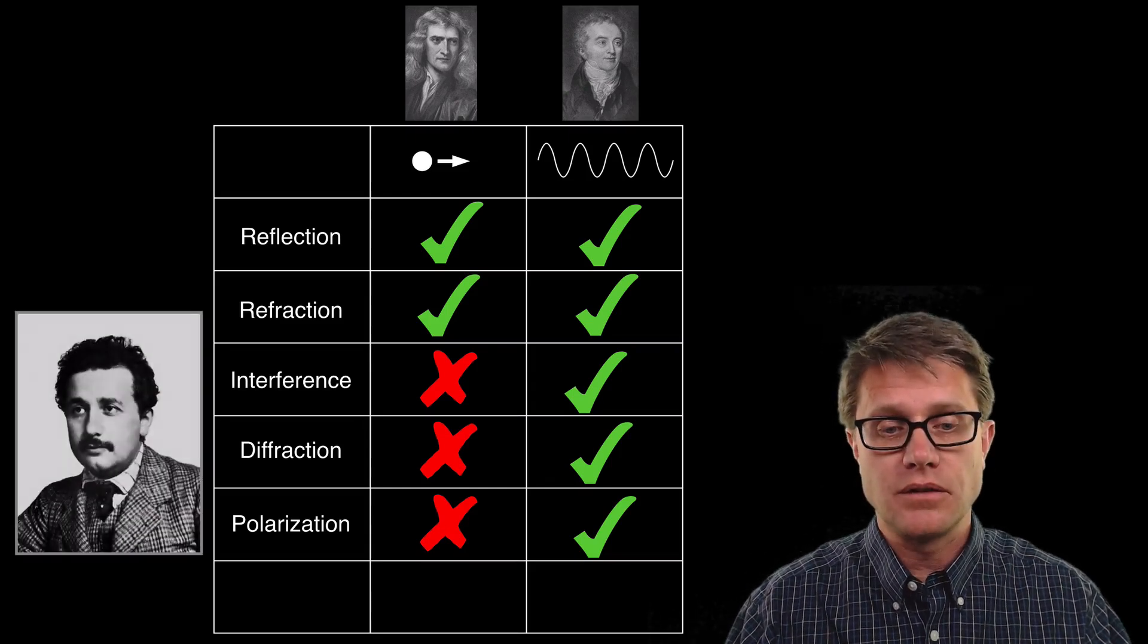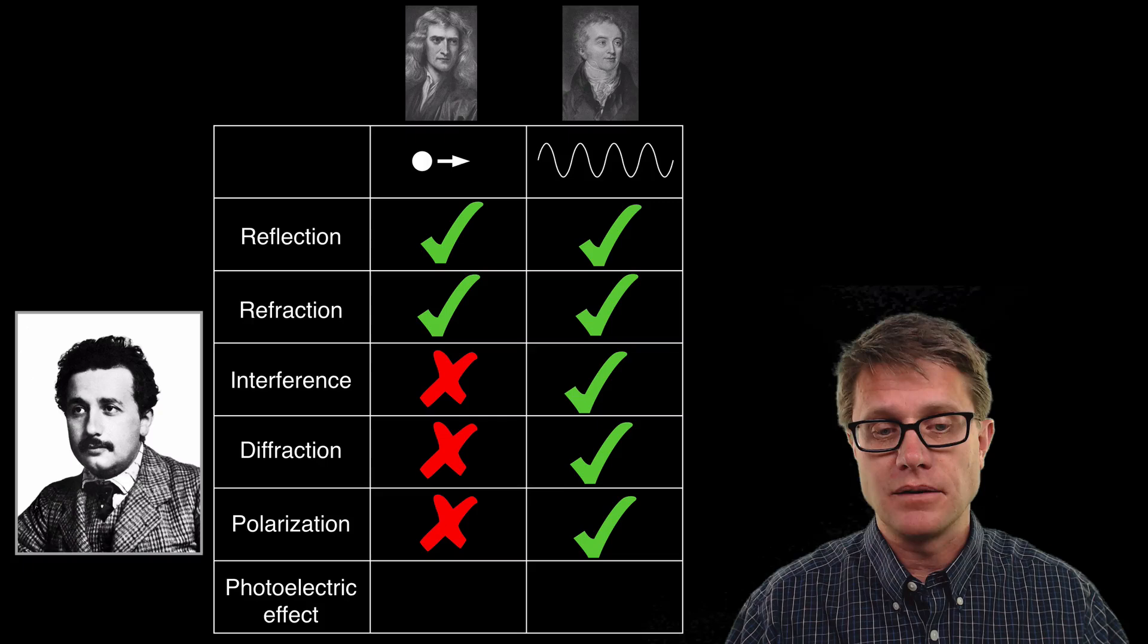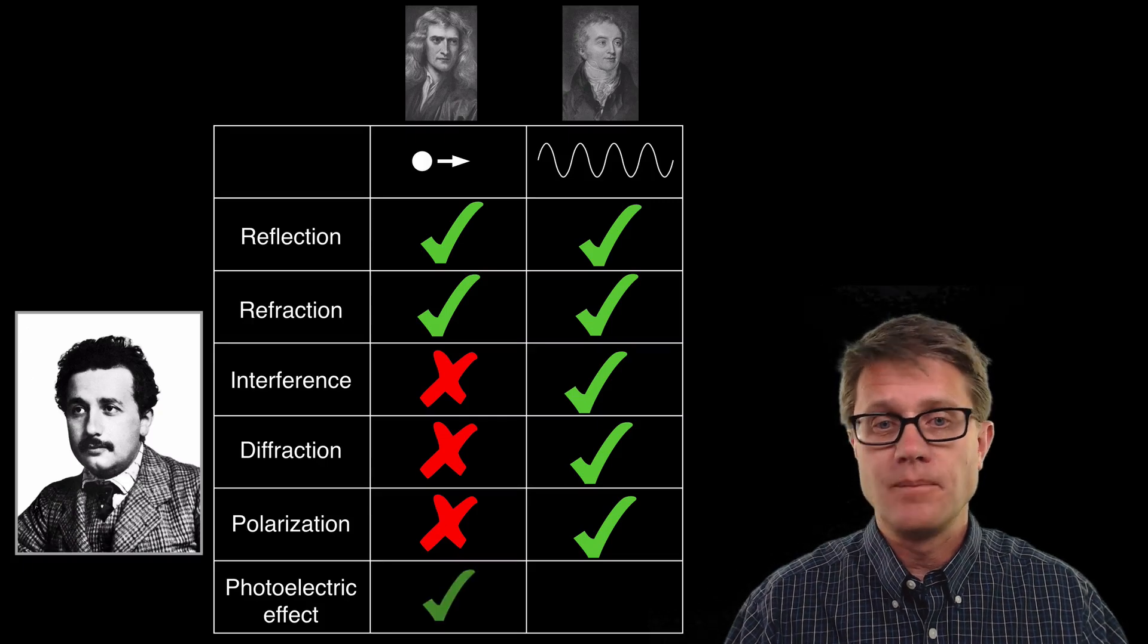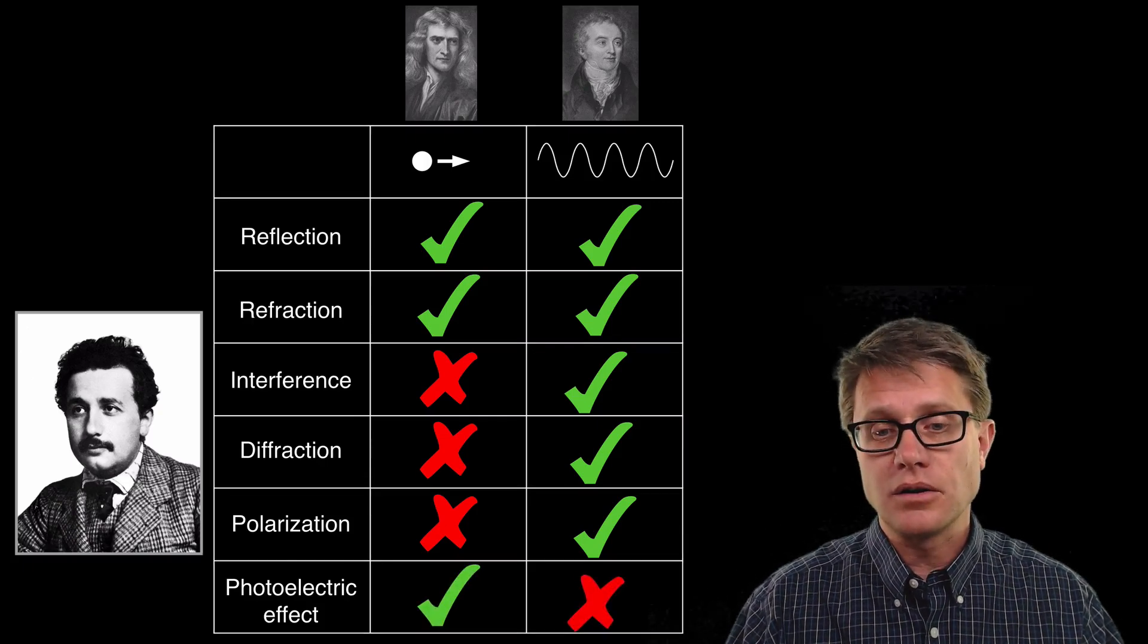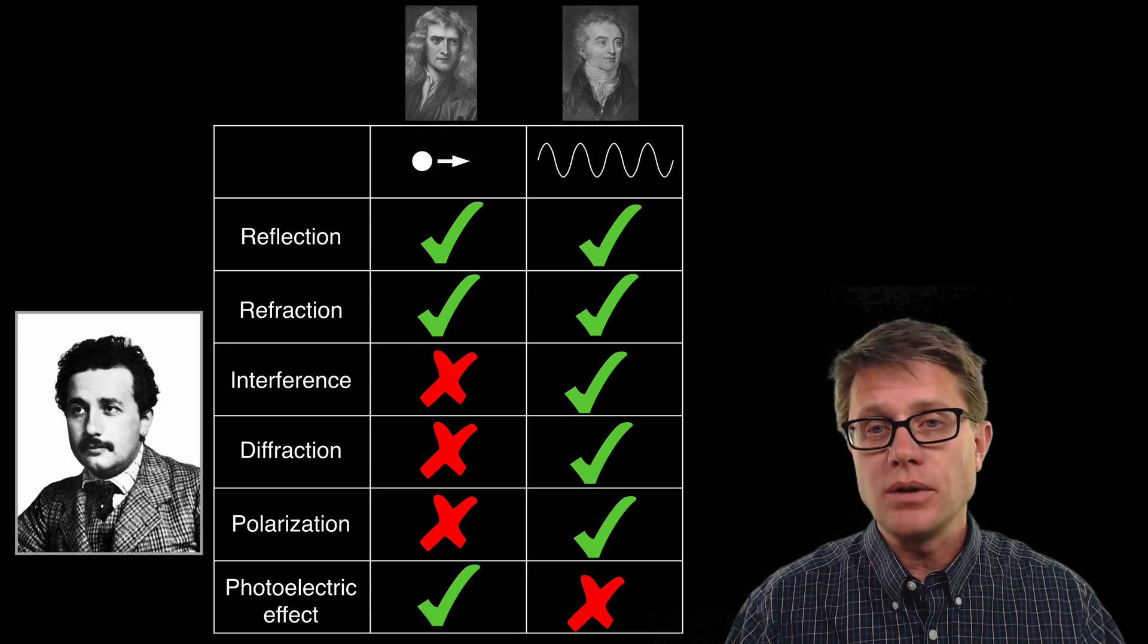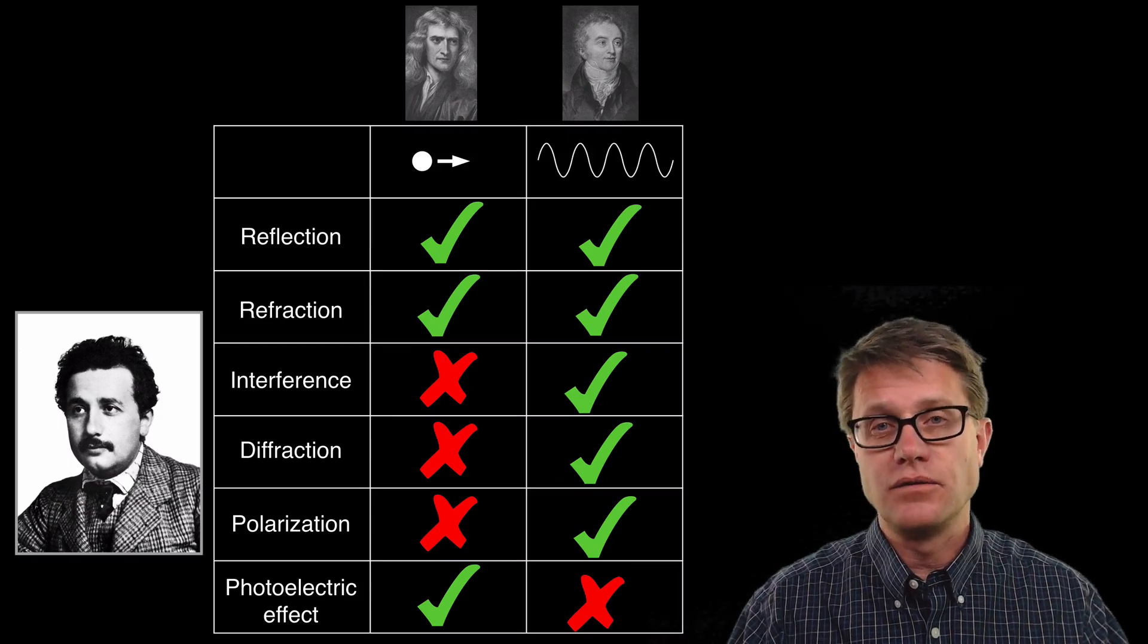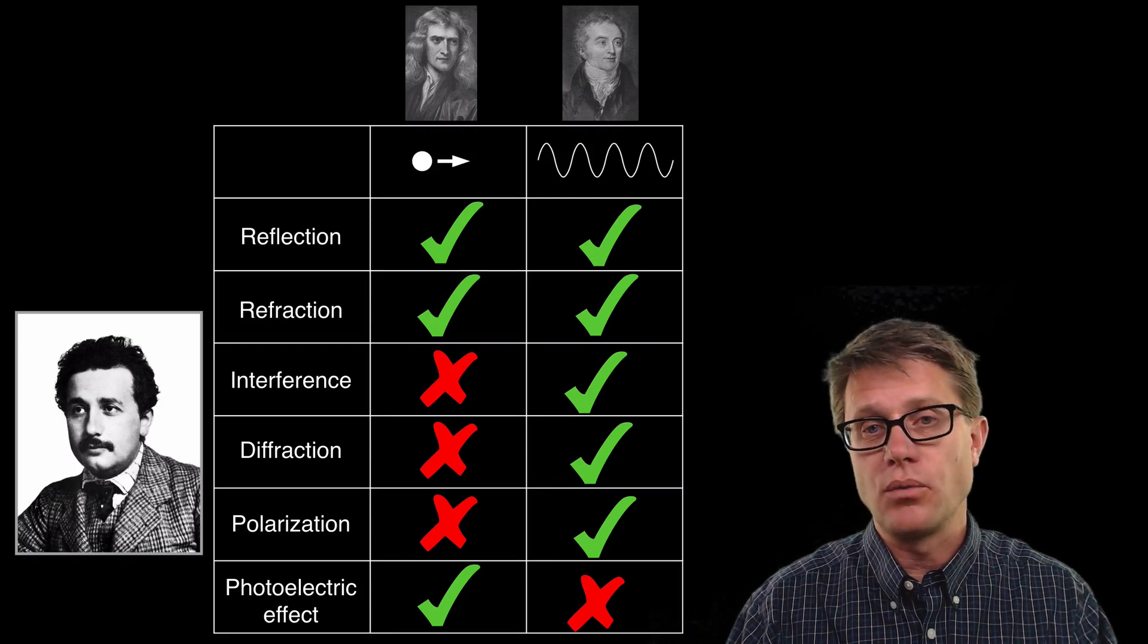And finally the photoelectric effect came around and Einstein came around. And what it showed is that the wave model does not work. Only the particle model works. And so now we have got a duality. This view of light as both a wave and a particle.